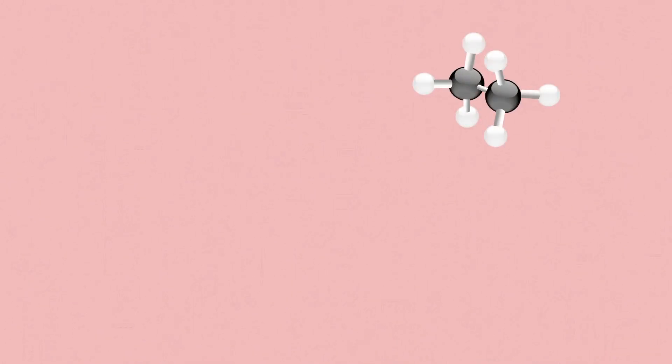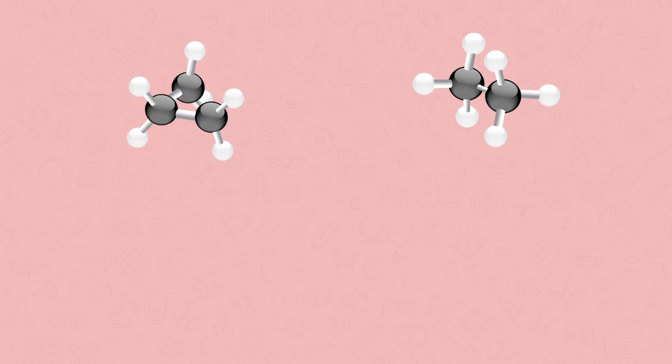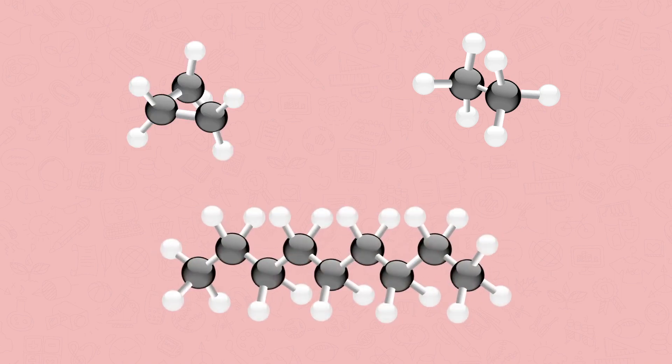Hydrocarbons come in many different sizes. Short chain hydrocarbons have only a few carbon atoms, whilst long chain hydrocarbons have lots of carbon atoms and may have side chains or form rings. The carbon atoms in these molecules are joined together by very strong covalent bonds.